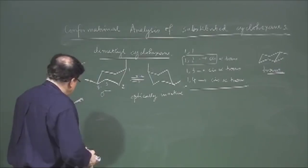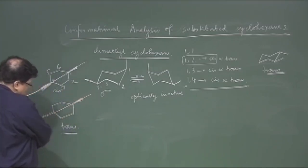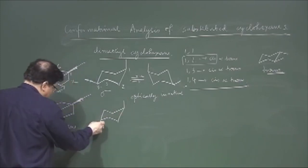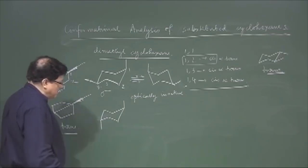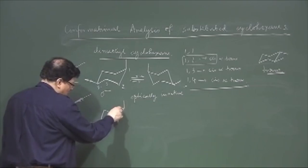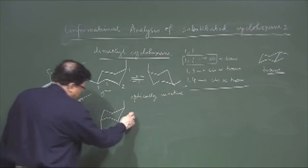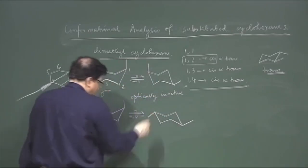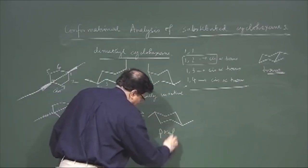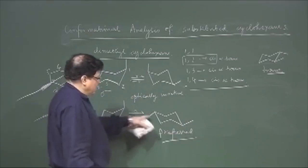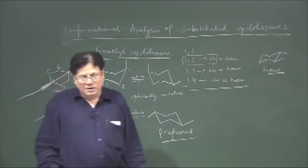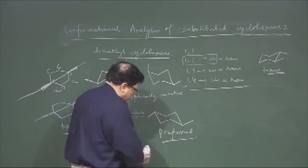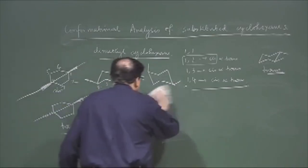The trans compound also has a plane of symmetry through C1 and C4, but the conformation is different. In the trans, one methyl is beta axial and the other is beta axial as well, which suffers from four gauche-butane interactions because two axial groups give 4 units. So it immediately flips, and the major preferred conformation has both groups equatorial. This does not introduce any additional energy because the anti form of butane is regarded as having zero-point energy. So that finishes the dimethyl systems.